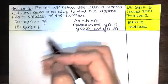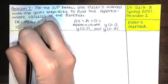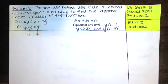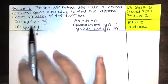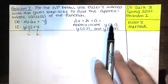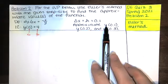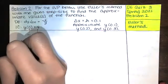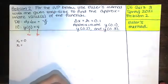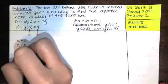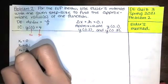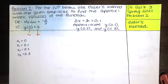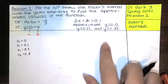Since we're taking a step size of 0.1 and our initial x value x-naught is 0, and our initial y value y-naught is 4, when we take steps of size 0.1 we go from x equals 0, then take a step delta x to 0.1, then add 0.1 again to 0.2, and once more to reach 0.3.